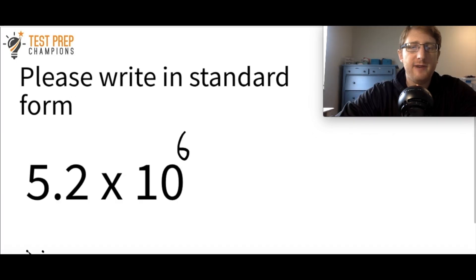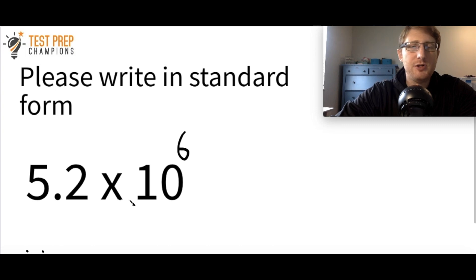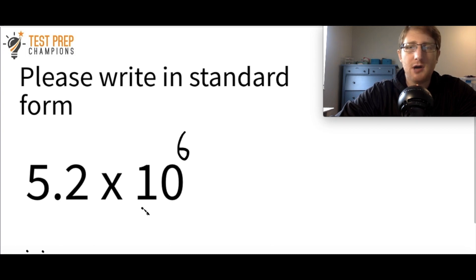So here we have 5.2 times 10 to the sixth, written in scientific notation. This time we're going to practice going from scientific notation to standard form. Write 5.2 times 10 to the sixth in standard form. It doesn't matter if you get it right or wrong for right now — we're just practicing.